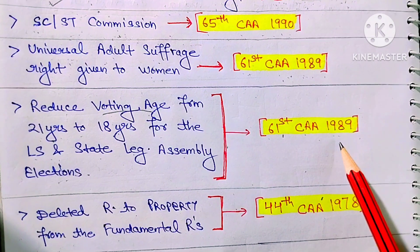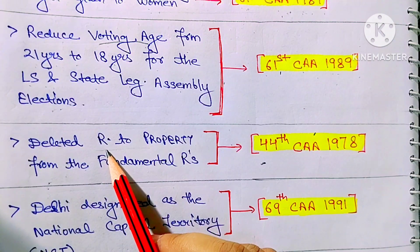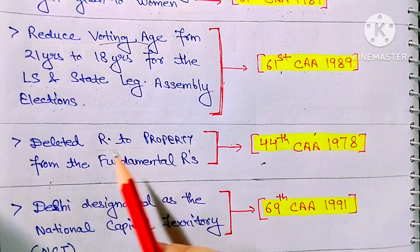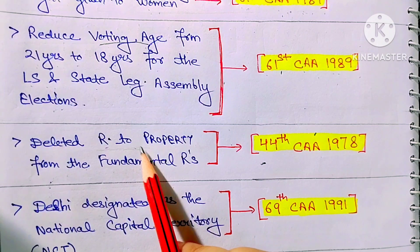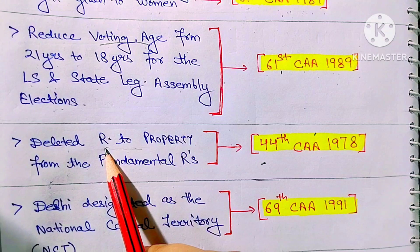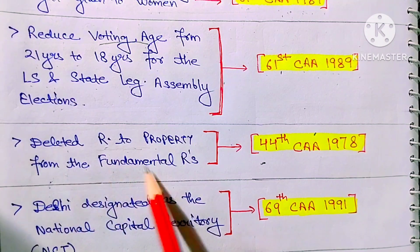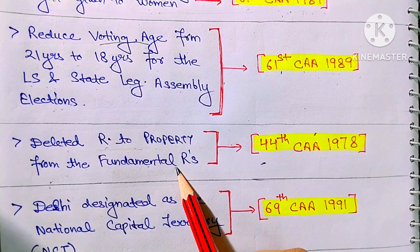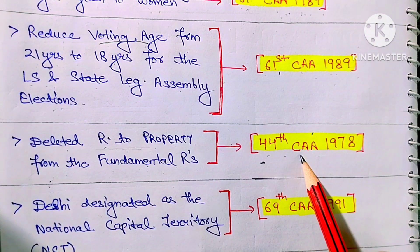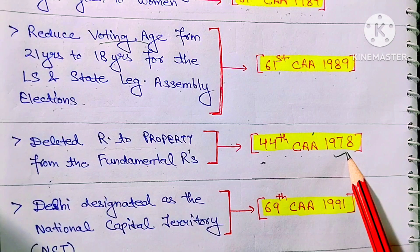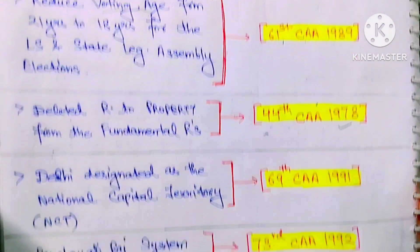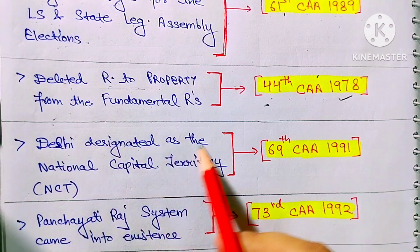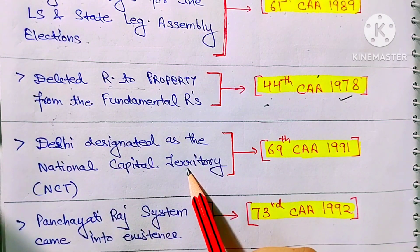Previously, the Right to Property was also included in our Fundamental Rights, but it has now been deleted. The Right to Property was removed from Fundamental Rights through the 44th Constitution Amendment Act 1978.